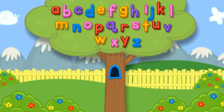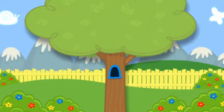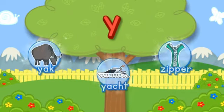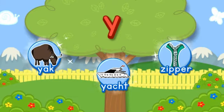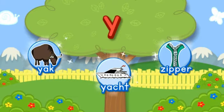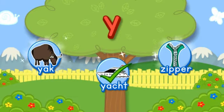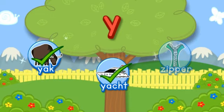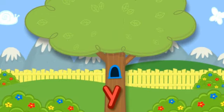Click the tree to shake it. Choose the pictures that start with the letter Y. Y-Y-Y-Yat starts with Y. Y-Y-Y-Yak starts with the letter Y. Hooray! You found all of them! Click the letter to put it in the tree. Y.